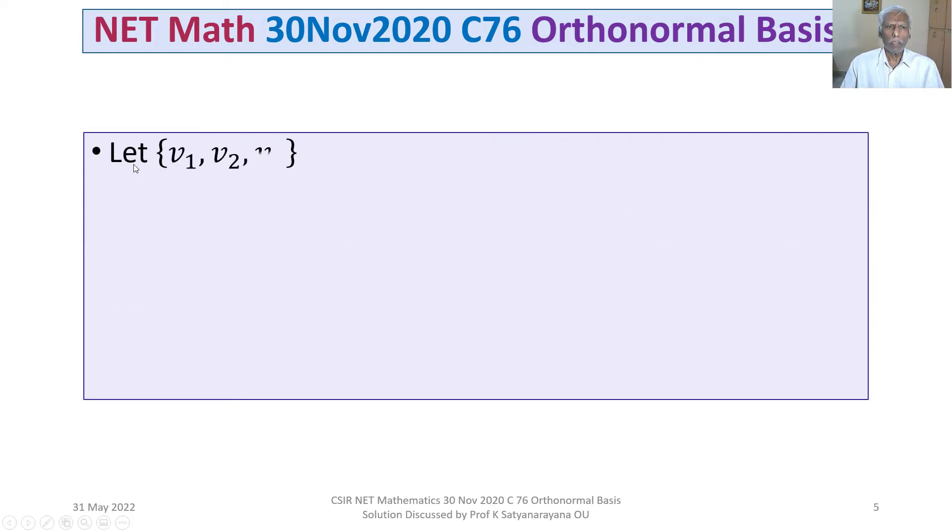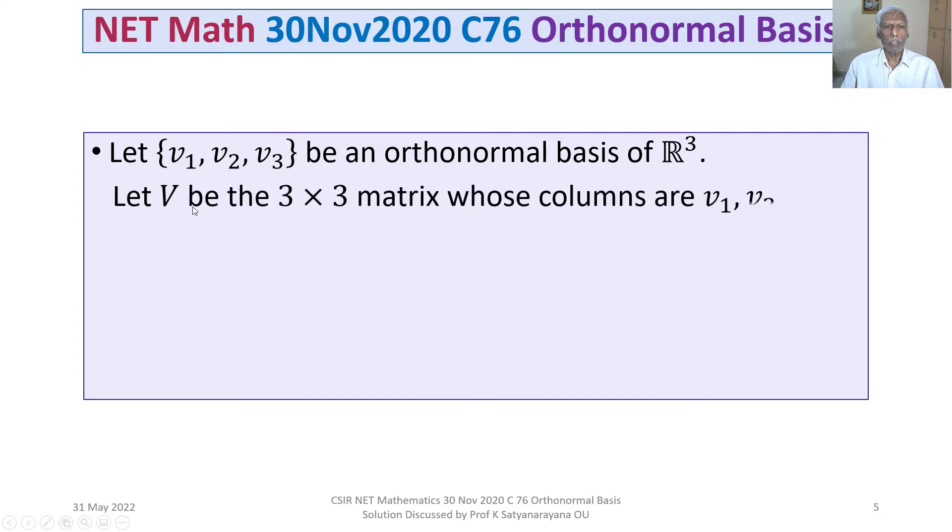Let the set consisting of V₁, V₂, V₃ be an orthonormal basis of R³. Let V be the 3 by 3 matrix whose columns are V₁, V₂, V₃.